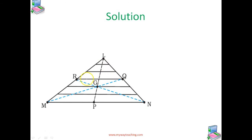By symmetry, each strip has its center of mass at its midpoint. Each strip is having its center of mass at its midpoint. If we join the midpoints of all the strips, we get the median L P.